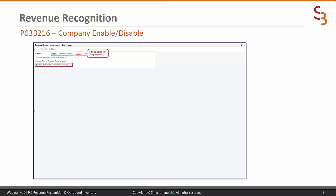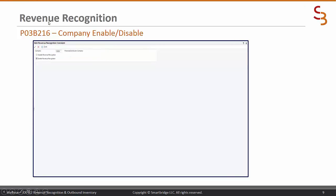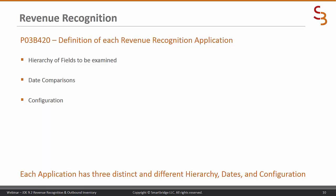Here's a picture of P03B216. The top portion is set up for company all zeros, the default company, and then you tell it whether you wish to disable all, enable all, or choose by company. We chose to do it by company. On the next screen you're prompted for the company number and whether you wish to enable or disable for that particular company.